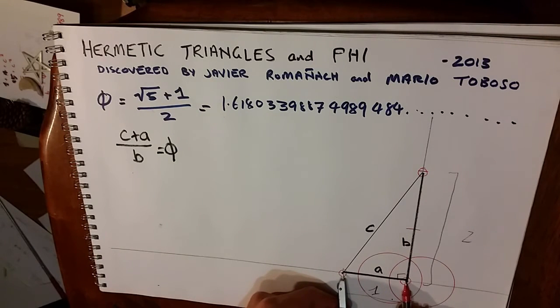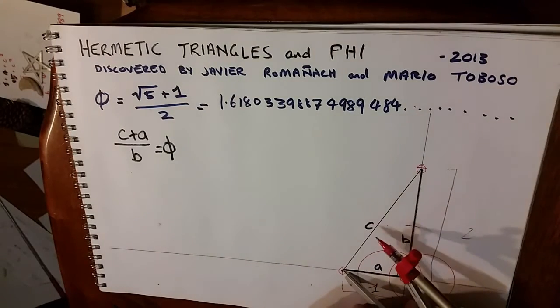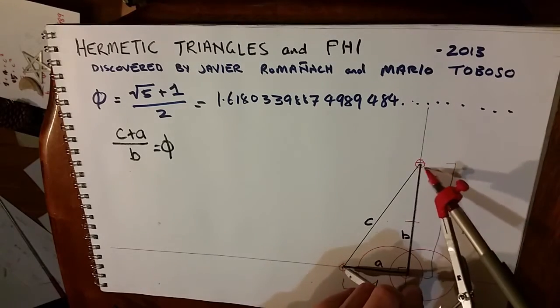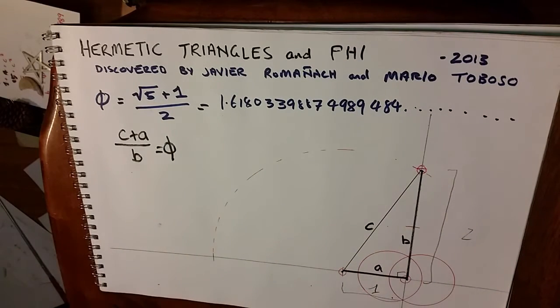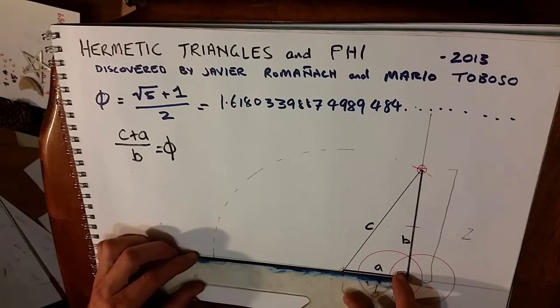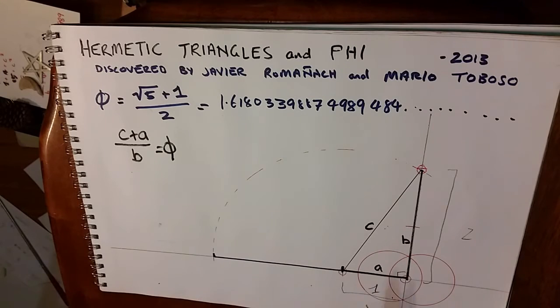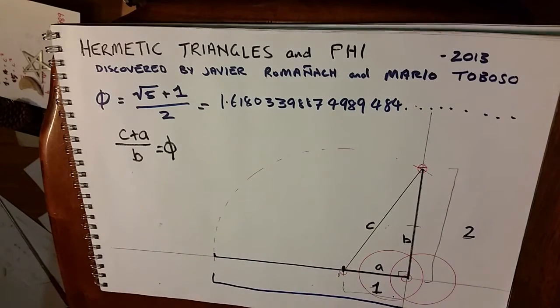That compass is still set there. But now what we need to do is go to that point and open it to the length of the hypotenuse, to the long diagonal. So we arc this down where it crosses and extend. So we have A, which we know to be one, B we know to be two, and so now we have A plus C and this is equal to phi, highly, highly accurate.